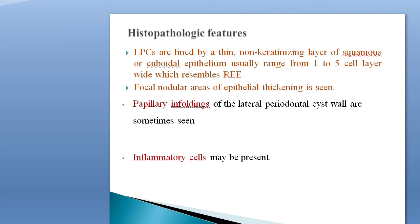Regarding histopathological features: lateral periodontal cysts are lined by a thin non-keratinized layer of squamous or cuboidal epithelium, usually ranging from one to five cell layers in thickness. It resembles reduced enamel epithelium — the cells are cuboidal and low columnar in shape. Focal nodular areas of epithelial thickening are also seen, and papillary infolding of the lateral periodontal cyst wall is sometimes observed. Inflammatory cells may be present in the fibrous connective tissue wall.